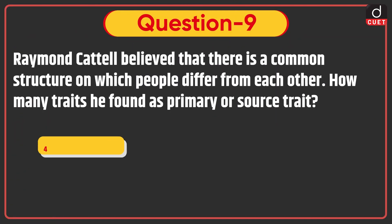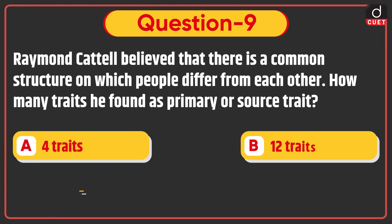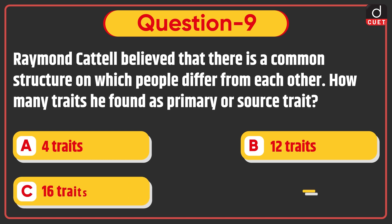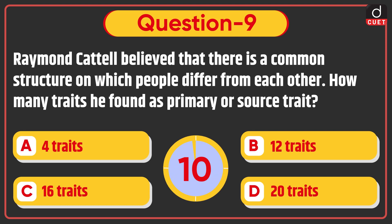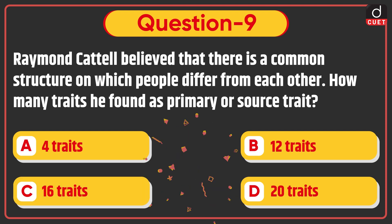Next question: Raymond Cattell believed that there is a common structure on which people differ from each other. How many traits did he find as primary or source traits — 4 traits, 12 traits, 16 traits, or 20 traits? The correct answer is option C: 16 traits.